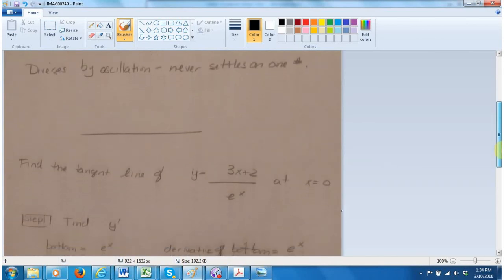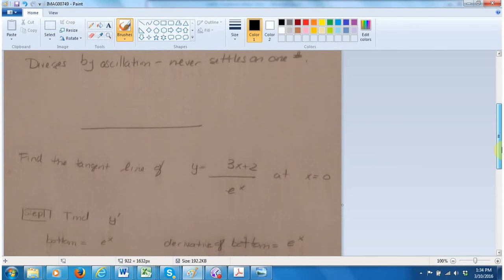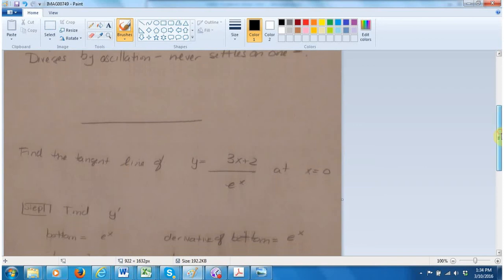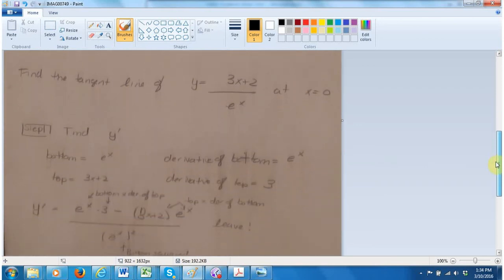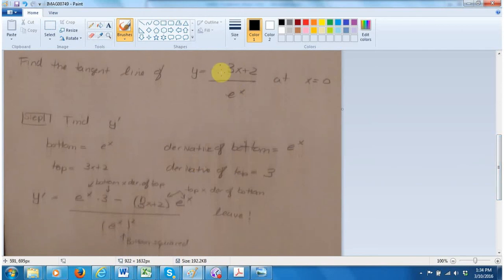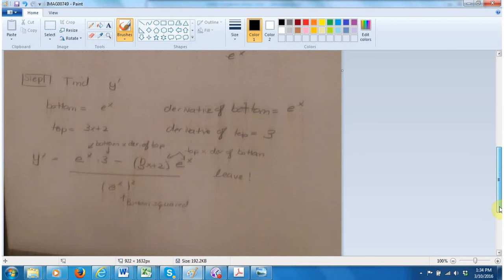This problem that was missing, that flagged the missing page, is you were supposed to find the tangent line of y equals (3x + 2) divided by e^x, which I pulled from the previous midterm, and that's at x equals 0. The first step is to find y prime. We do this - this is a rational function, it has a bottom and a top. The bottom is e^x, the top is 3x + 2, the derivative of the bottom is e^x, the derivative of the top is 3, and then you plug it into the quotient rule. Bottom times the derivative of the top minus top times the derivative of the bottom all over the bottom squared. Some of you love to do algebra, leave it alone, we both don't need to see it.